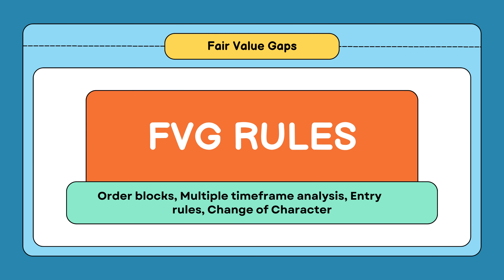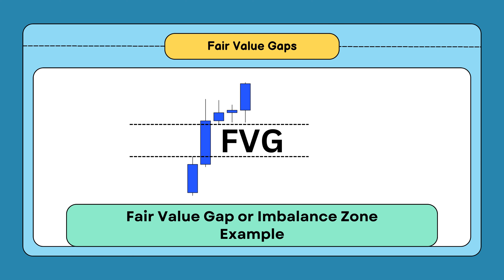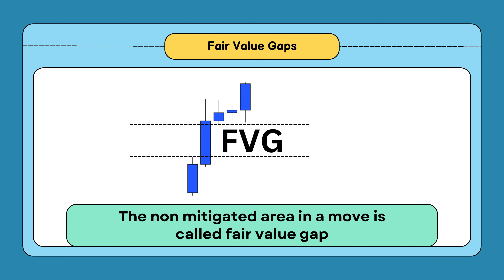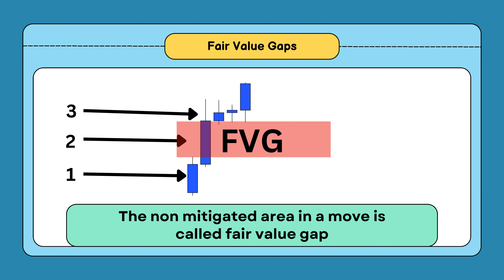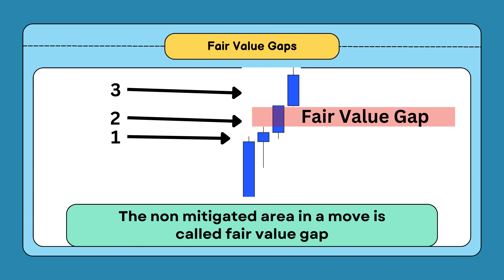Let me explain some of the primary rules about fair value gaps in the smart money concept. Here is an example of a fair value gap, or imbalance zone, in the bullish side. The non-mitigated area in a move is called a fair value gap. You can see that this is the area where no selling takes place, and the wick of the third candle is not touching the wick of the first candle. This is a second example of a fair value gap in the buy side — you can also see that the wick of the third candle is not touching the wick of the first candle.